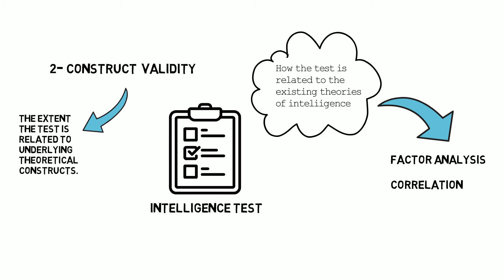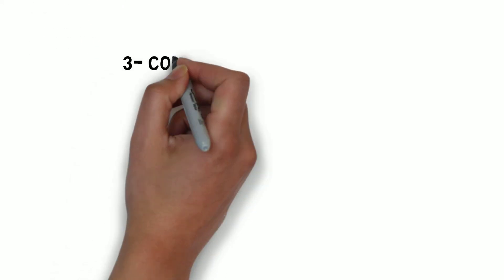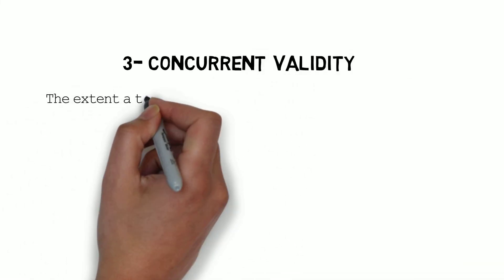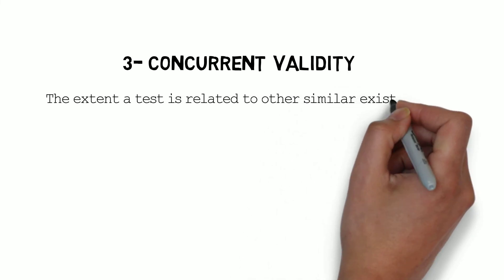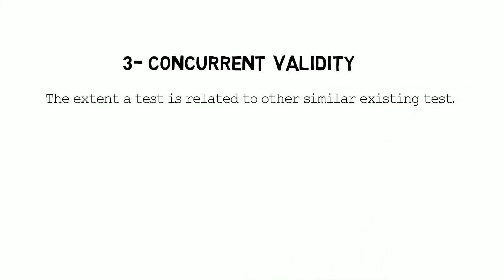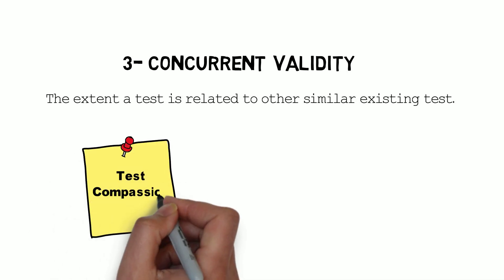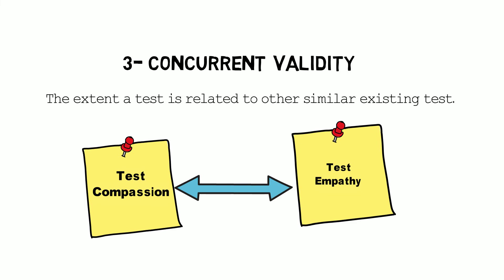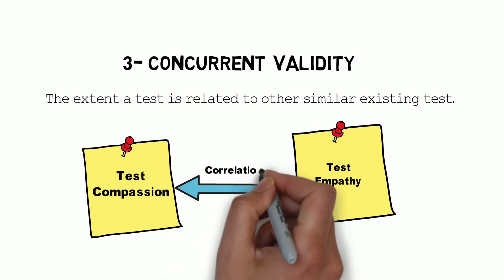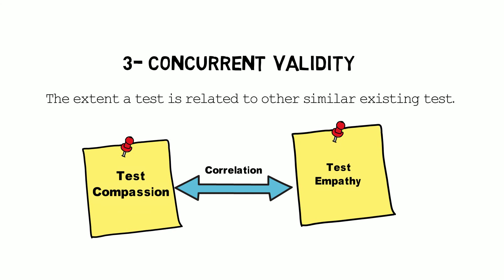The third type of validity is concurrent validity. Concurrent validity refers to the extent to which a test is related to other similar existing tests. For example, since empathy and compassion share some similarities as constructs, a compassion measure and an empathy measure should be correlated. Demonstrating a correlation between tests that are similar in their construct enhances concurrent validity.